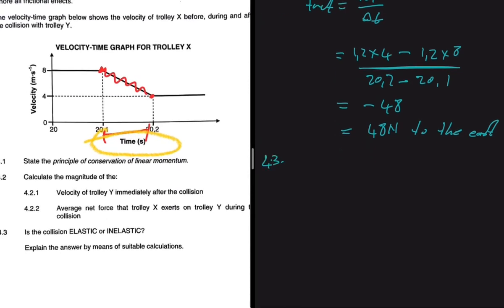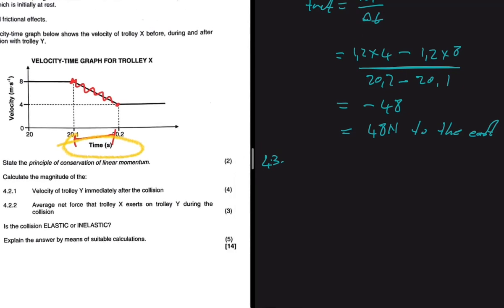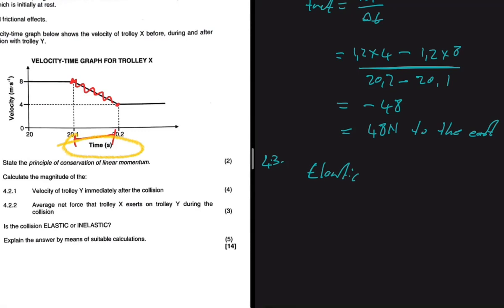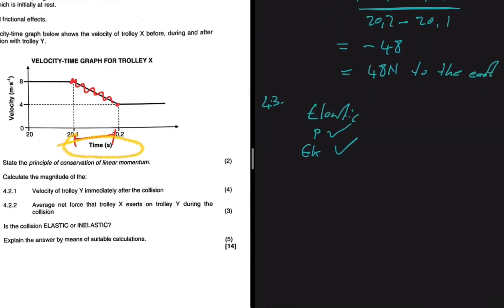For 4.3, we need to determine whether the collision is elastic or inelastic and explain using a suitable calculation. For a collision to be elastic, two things must be conserved: momentum and kinetic energy. In 4.2.1 we assumed momentum is conserved, so now we just need to calculate kinetic energy before and after and see if it is conserved.